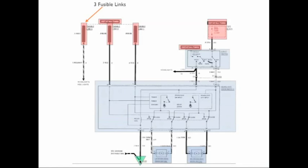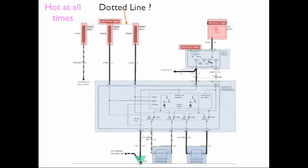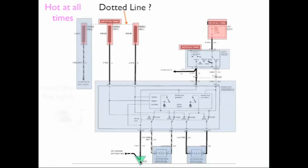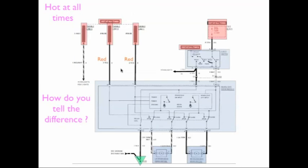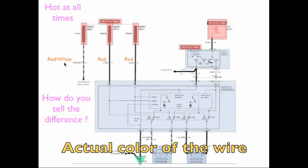Now let's talk about the fusible links for just a minute. There are three of them and they're connected at the top by a dotted line, which means they're all connected at the very same point. The link on the left at the very bottom says 'headlights,' meaning this link powers the headlights — it has nothing to do with the door module. The two links that go to the door module have a red wire, and the one that goes to the headlights has a red with white wire.